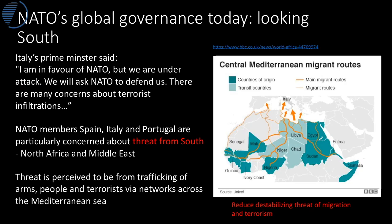As with all large military alliances, not all members have the same agenda. Countries in Southern Europe — Italy, Spain and Portugal — look south rather than east. Italy's Prime Minister has said: 'I'm in favour of NATO, but we're under attack. We're asking NATO to defend us. There are so many concerns about terrorist infiltrations.' The concern of these areas of Southern Europe is linked to migration, the trafficking of people, and the movement of terrorists. People trafficking routes have developed across Africa through the Sahel and Sahara Desert region, leading to the Mediterranean Sea, and NATO has placed naval vessels in this area to police and monitor the situation.